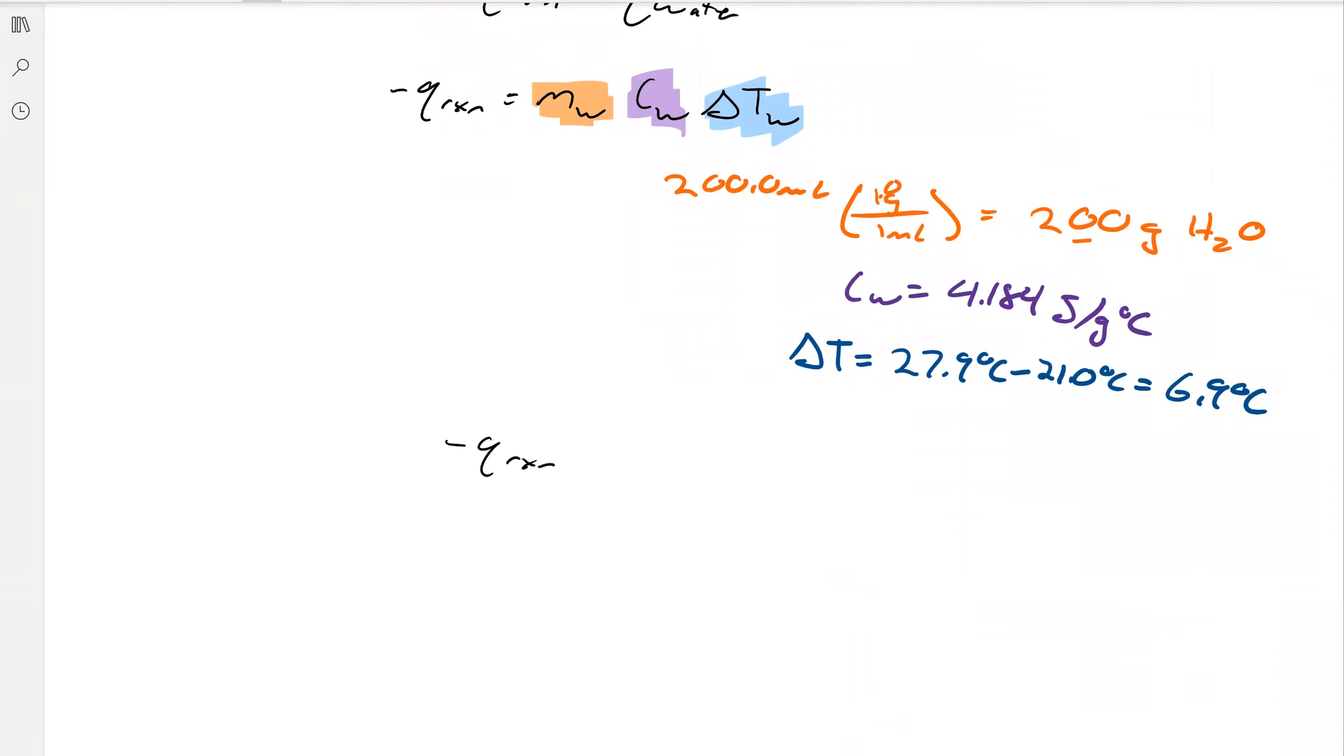Then we just go ahead, plug in all of those units and chug that into our calculator. You should get about negative 5800 joules, which will be equal to about negative 5.8 kilojoules. Notice that this sign is negative for our Q of the reaction.